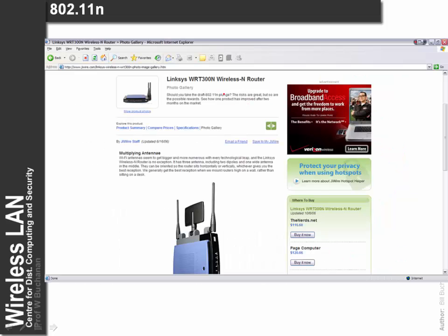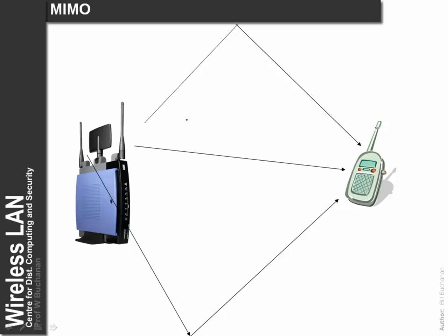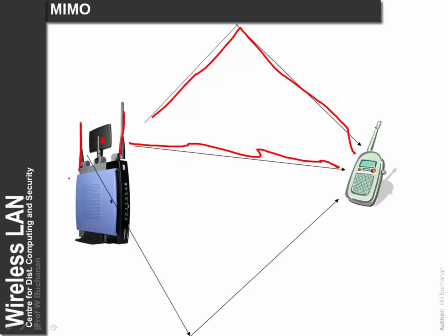An example of this is the Cisco 300N wireless device, which has three antennas that can send simultaneously on different streams. The MIMO technology allows multipath distortion to carry different data streams.